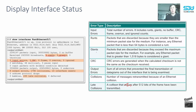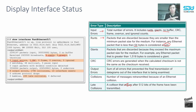Input errors describe the total number of errors including runts, no-buffer, CRC, frame, overrun, and ignore counts. 'Runts' are frames discarded because they are smaller than the minimum packet size — for Ethernet, any packet less than 64 bytes is considered a runt, an error because 64 bytes is the minimum valid frame size.